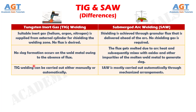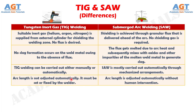Number 9: TIG welding can be carried out either manually or automatically, whereas submerged arc welding is mostly carried out automatically through mechanized arrangements. Number 10: in TIG welding, arc length is not adjusted automatically — it must be set or fixed by the welder — whereas in submerged arc welding, arc length is adjusted automatically without human intervention.